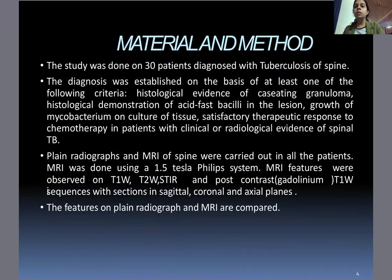Materials and methods: The study was conducted on 30 patients diagnosed with TB of the spine. The diagnosis was established on the basis of at least one of the following criteria: histological evidence of caseating granulomas, culture of acid-fast bacilli, or satisfactory therapeutic response to chemotherapy in patients with clinical or radiological evidence of spinal TB. Plain radiographs and MRI of the spine were carried out in all patients.